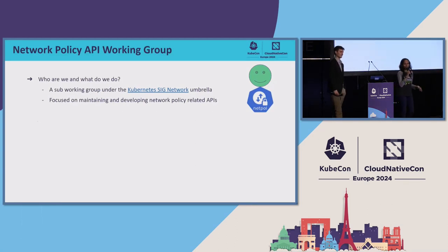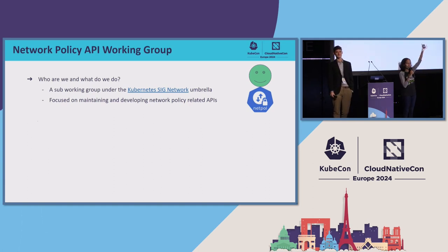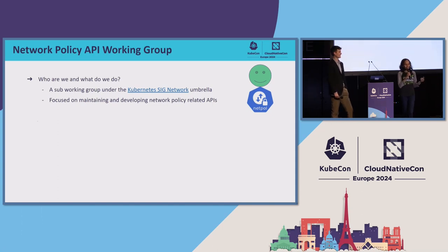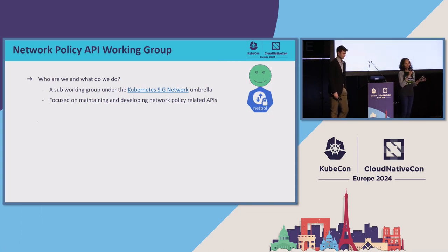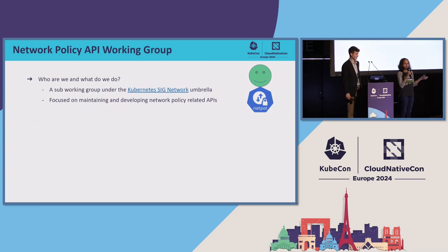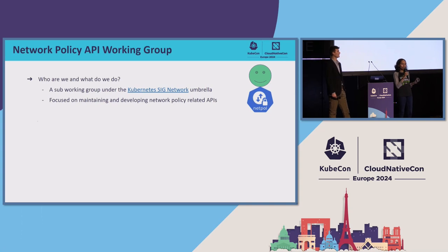Let's get started with who we are. We are actually a sub working group within SIG Network — special interest group network. We call ourselves the network policy API working group, and we are mainly focused on developing new policy APIs and maintaining the existing ones that we already have.